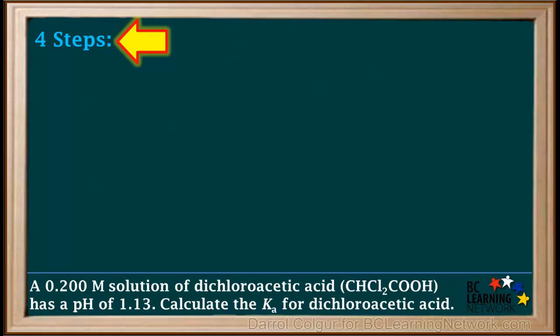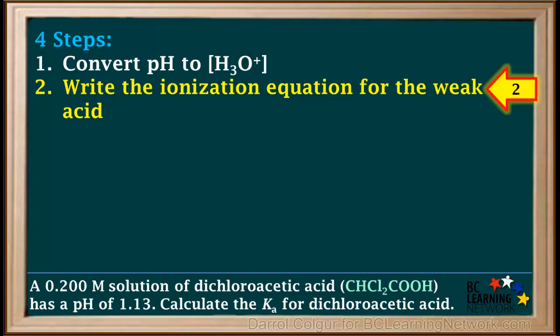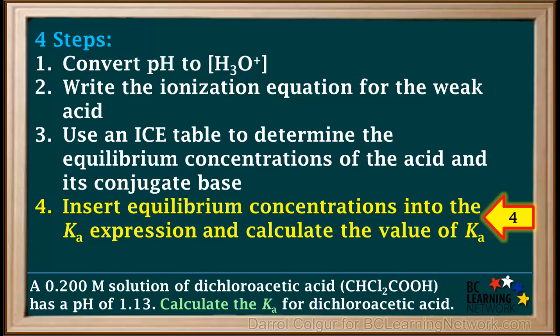There are four main steps we can take to solve this problem. The first thing we do is convert the given pH into hydronium ion concentration. The second step is to write the ionization equation for the given weak acid. The third step is to draw an ICE table under the ionization equation and use it to calculate the equilibrium concentration of the acid and its conjugate base. In step 4, we insert the equilibrium concentrations into the Ka expression and calculate its value.